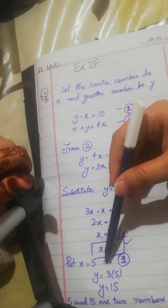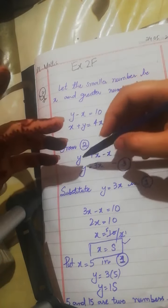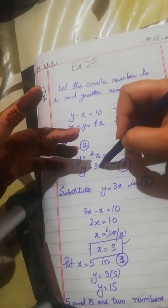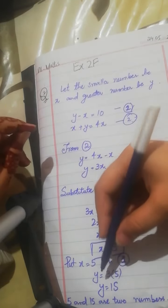Now we put x in equation 3. y equals 3x. y equals 3 times 5. y equals 15. So 5 and 15 are two numbers.